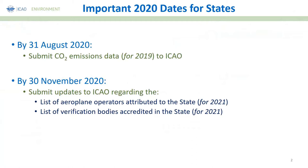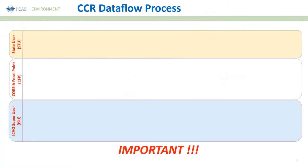Also required is the list of verification bodies accredited in the state. The date is 2021 because the actual verification will happen in the first few months of 2021, but the data to be verified is from the year 2020. We are not going to discuss how you report information on airplane operators and verification bodies in this training — we're going to focus on the CO2 emissions data for 2019, as we have limited time. There will be another opportunity during in-person seminars later this year.